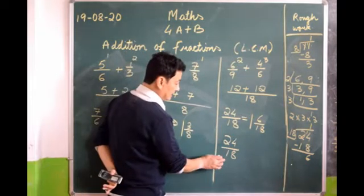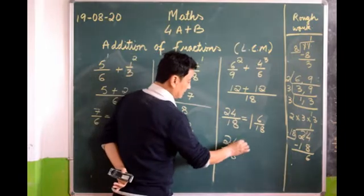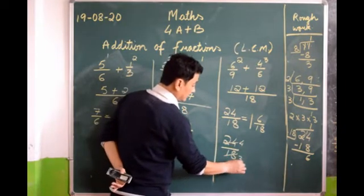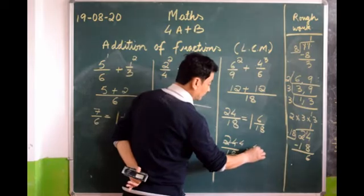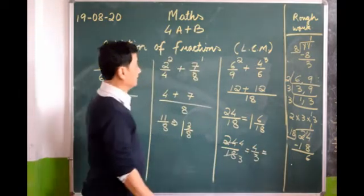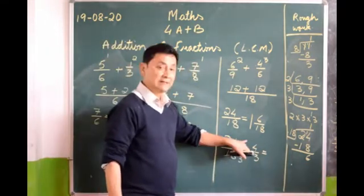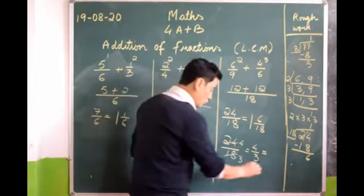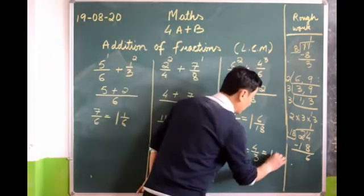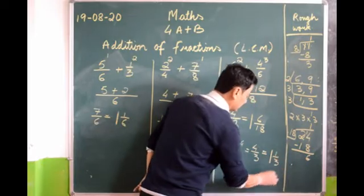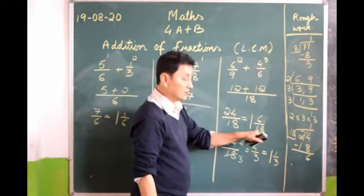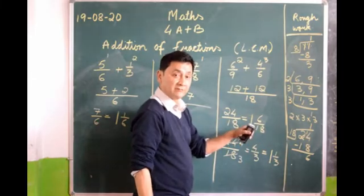But if you know how to do it: which number goes into 24 and 18? 6. 6 fours are 24, and 6 threes are 18, so you get a new number. 3 plus 1 gives 1 and 4/3, which simplifies to 1 and 1/3. Don't worry — this answer and the previous answer are the same, just expressed differently.